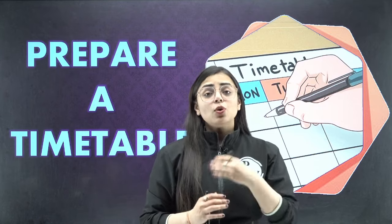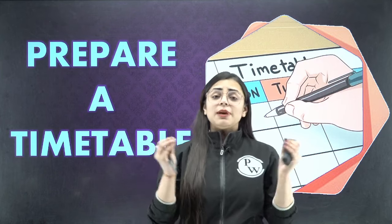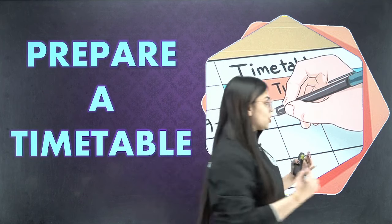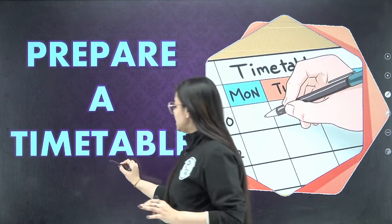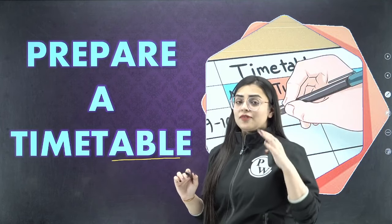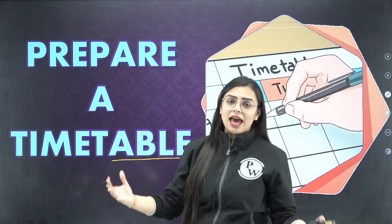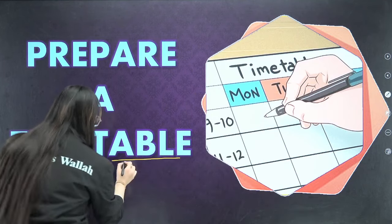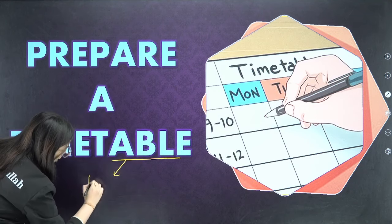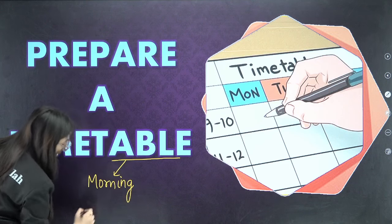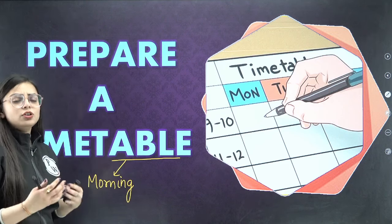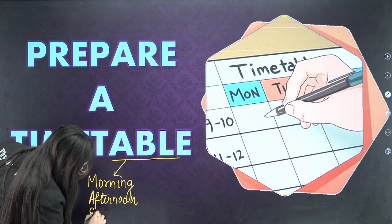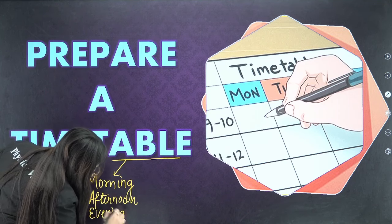The best method to prepare a timetable is to divide it into four segments: morning, afternoon, evening, and night. You prepare four slots for your day. In each of these slots you can assign specific study time, with a break in between — for example, a breakfast break after the morning slot, and so on across the day.